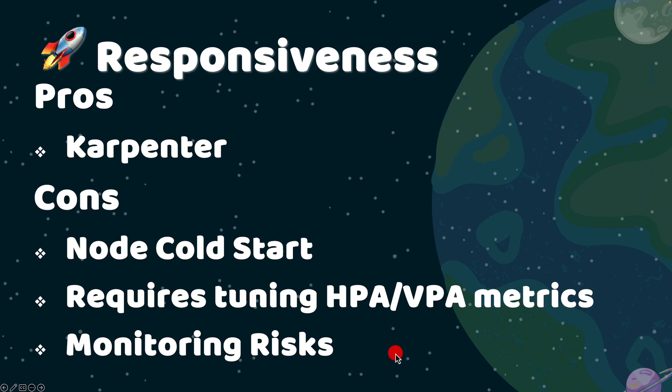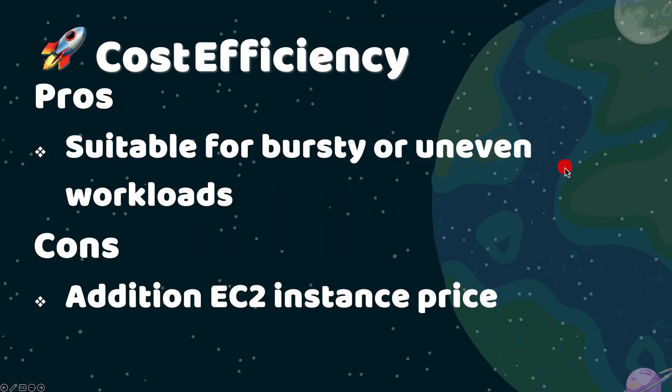Does Auto Mode really save money? Well, it depends. Auto Mode is great for unpredictable workloads — if your app traffic goes up and down a lot, Auto Mode scales accordingly and helps cut costs. However, if your workload is always the same, Auto Mode may cost more because it adds additional EKS overhead costs. So when should you use it? Let's break it down.